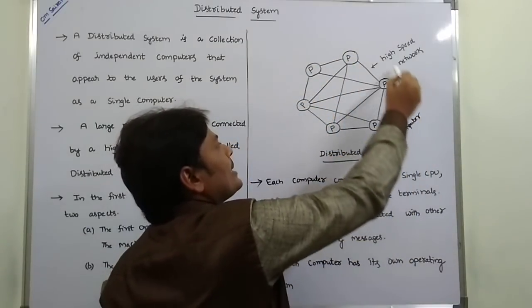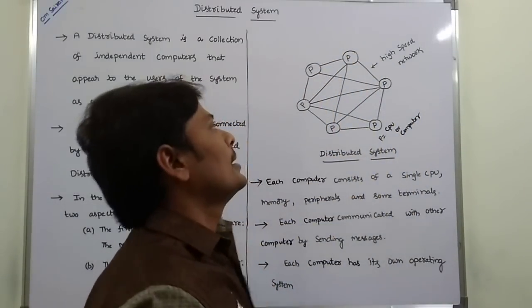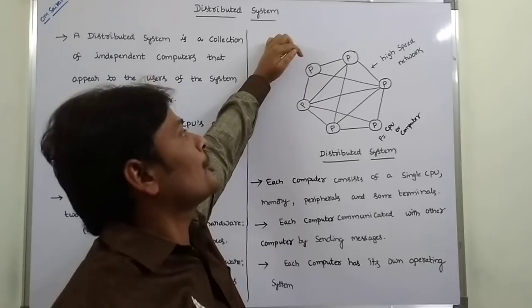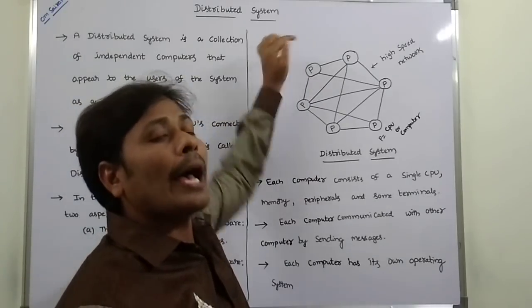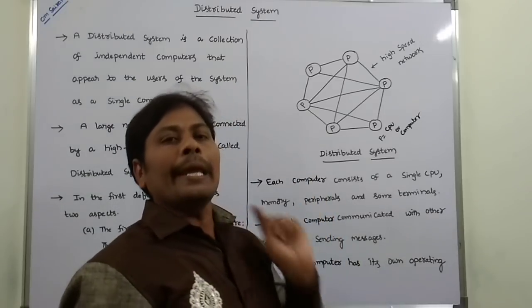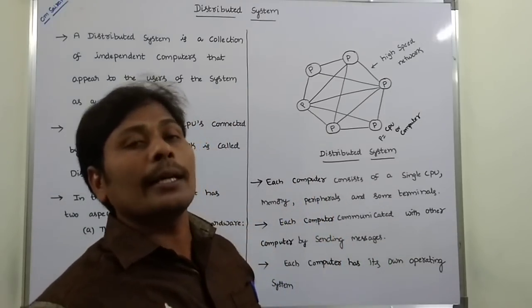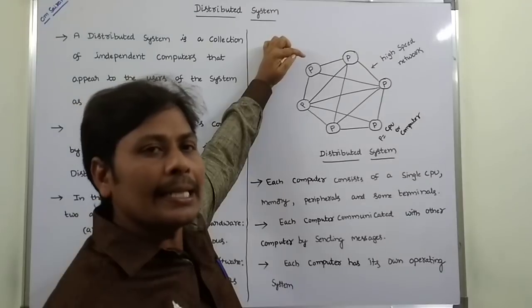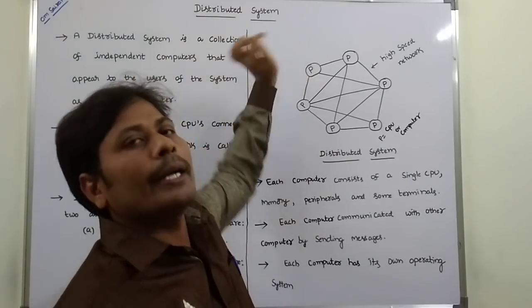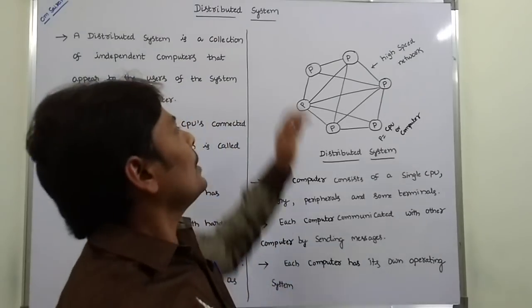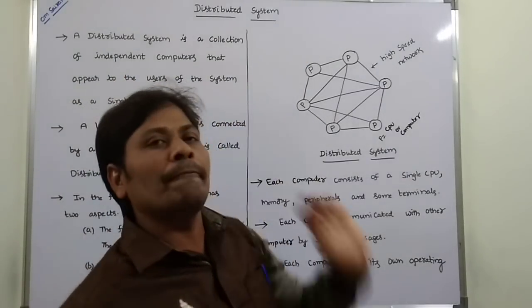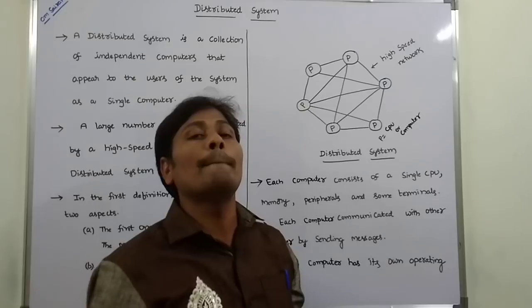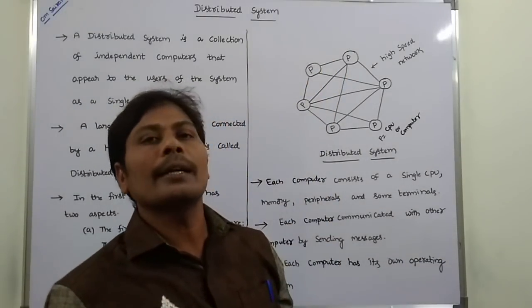So, this collection of six computers is a Distributed System. In the Distributed System, each and every computer has a single CPU, memory, peripherals, and other terminals. Each CPU communicates with the other CPUs in the Distributed System by sending messages from one computer to another.